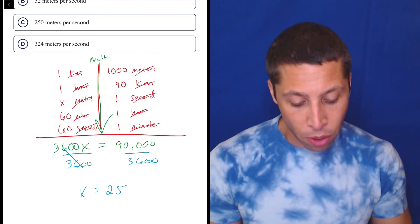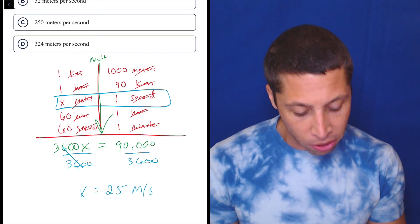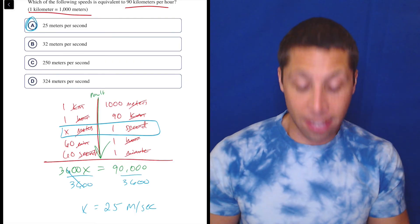And now we can go back to the units. What were the units involved with this x? Meters per second, right? So now do we have that? Yes, it's 25. It's choice A. That is the answer.